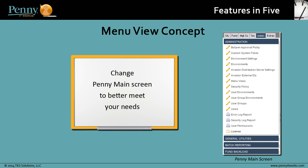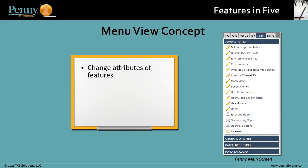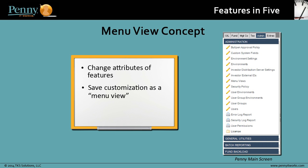The concept is pretty straightforward. You can change the Penny main screen to better meet your needs. You can change the attributes of features, such as folders, tabs, report and screen names and icons, and even delete them from the main screen. You save this customization as a menu view, then assign it to users, and it replaces their default Penny main screen. That's a basic overview. Let's first take a look at how you create a menu view.